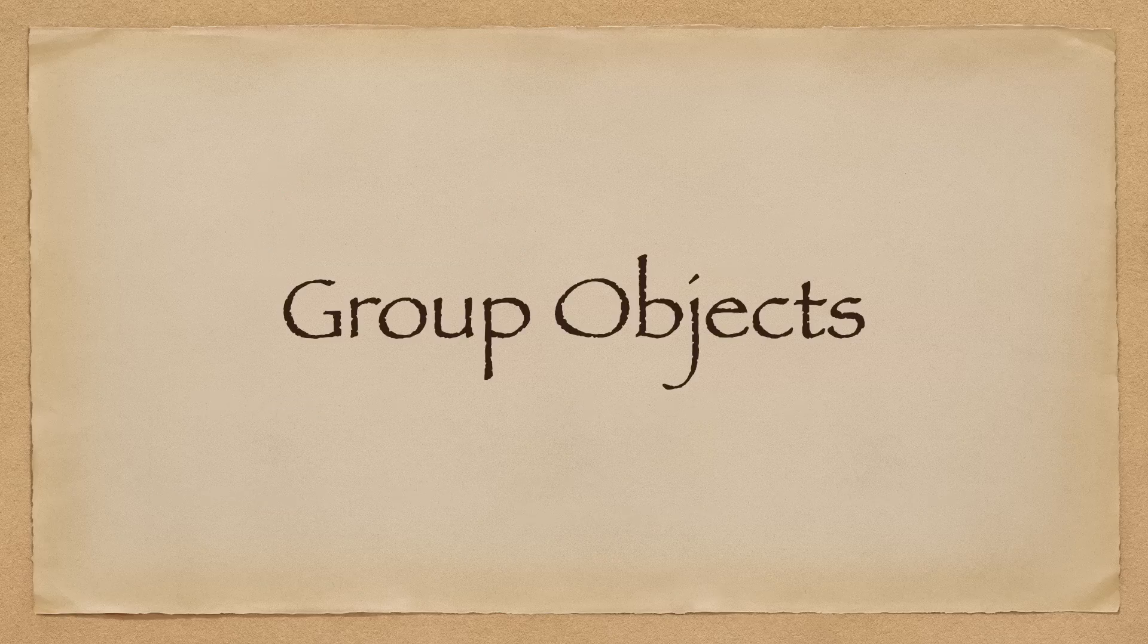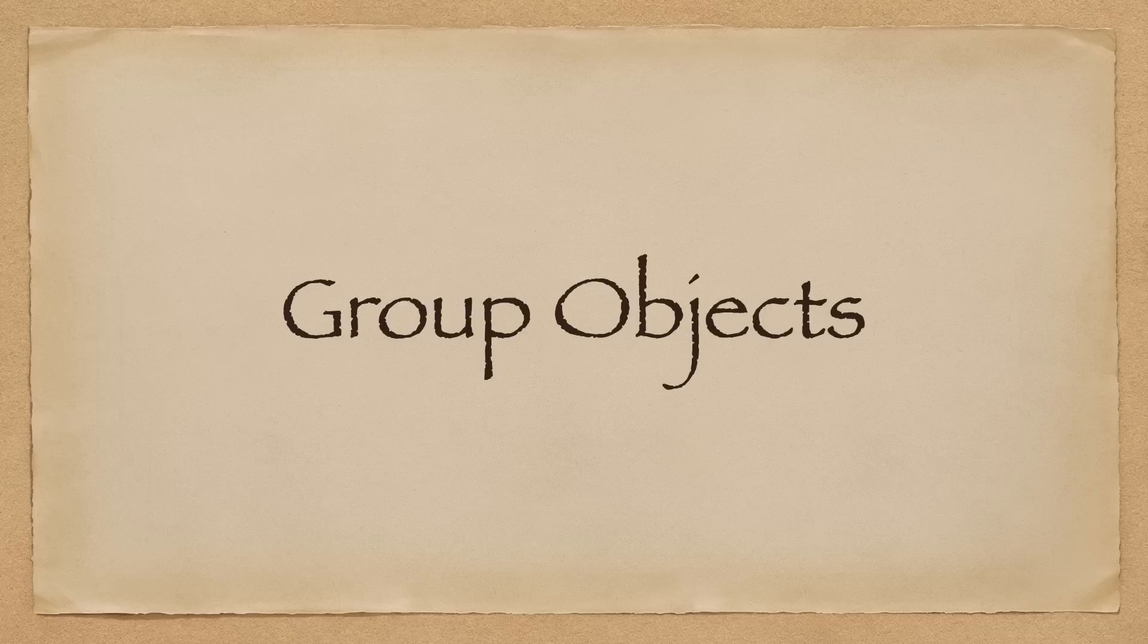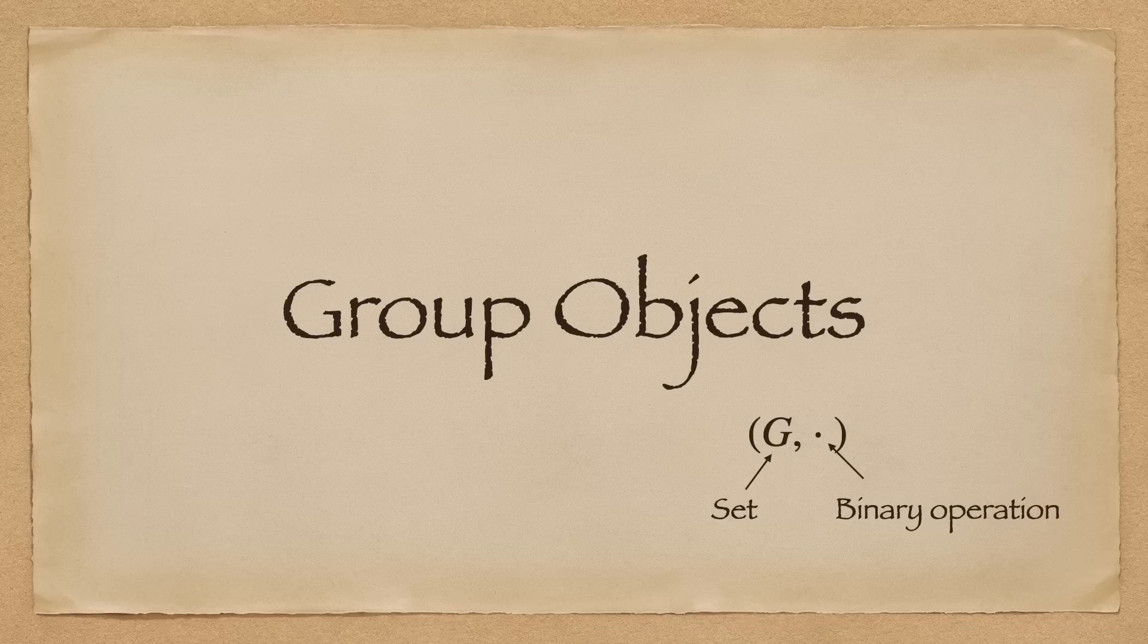A fun thing to think about are group objects. Groups are traditionally built on sets along with a binary operation. But since we're now category theorists, we want to ask, can we generalize it to more complicated structures than sets?